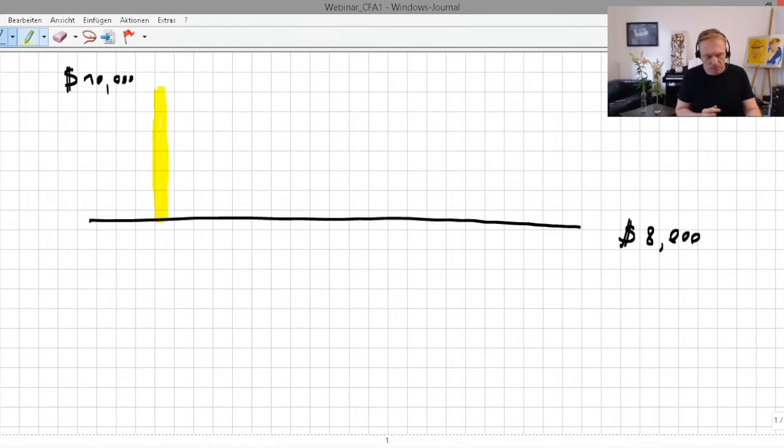and there is a decrease of, first, the revaluation surplus, and second, there is a loss, there is a loss of $1,000, right?